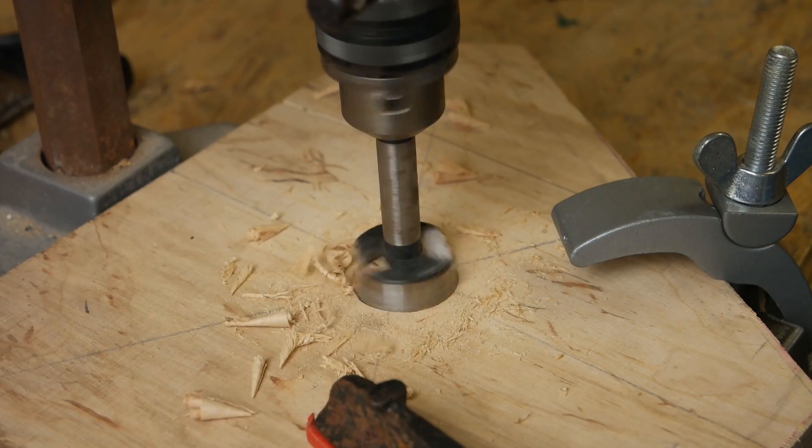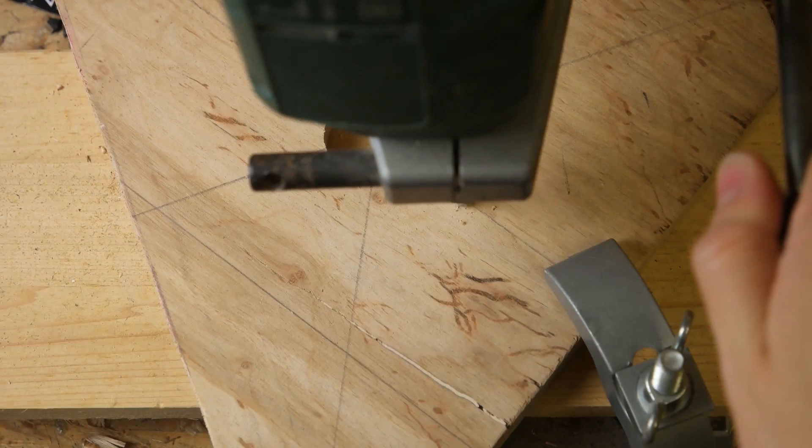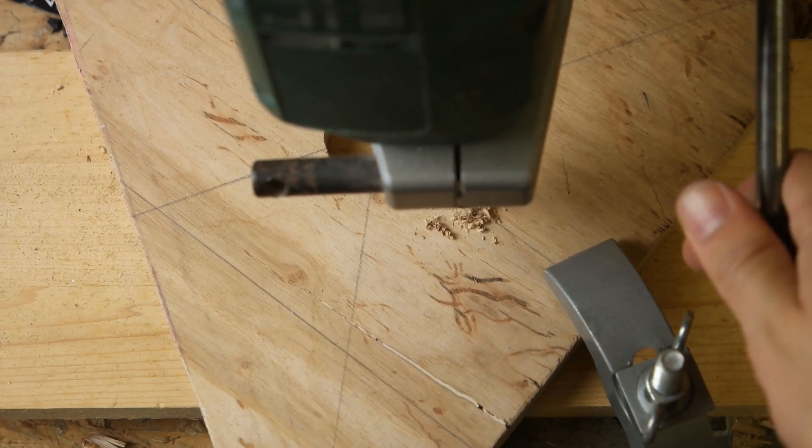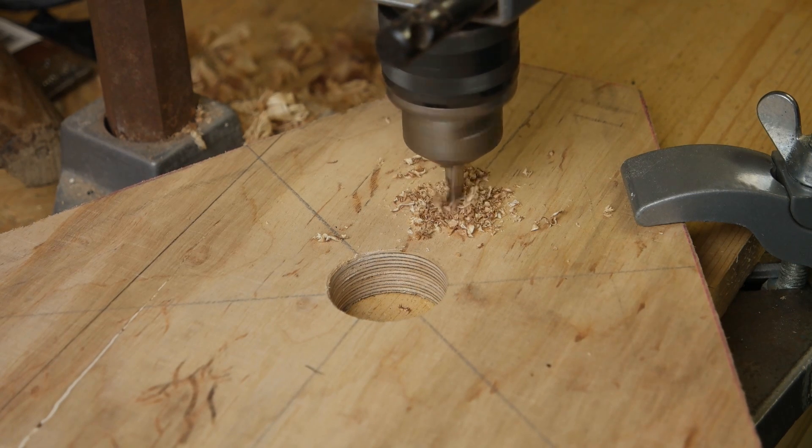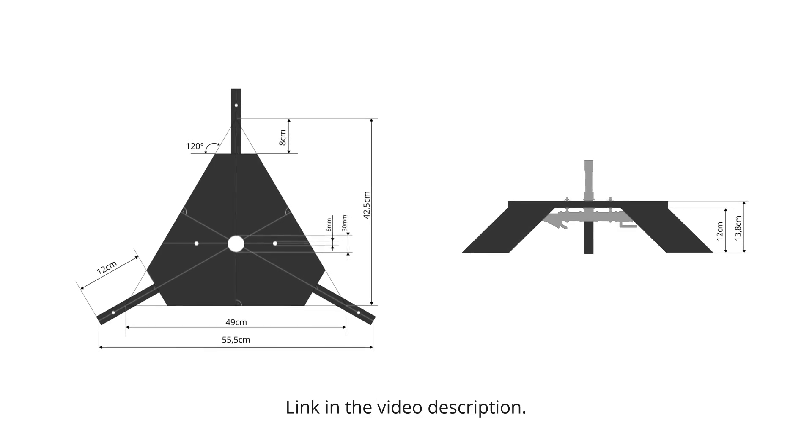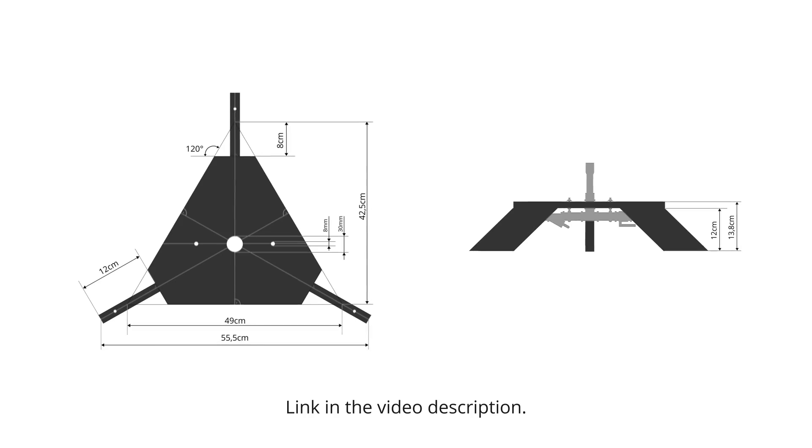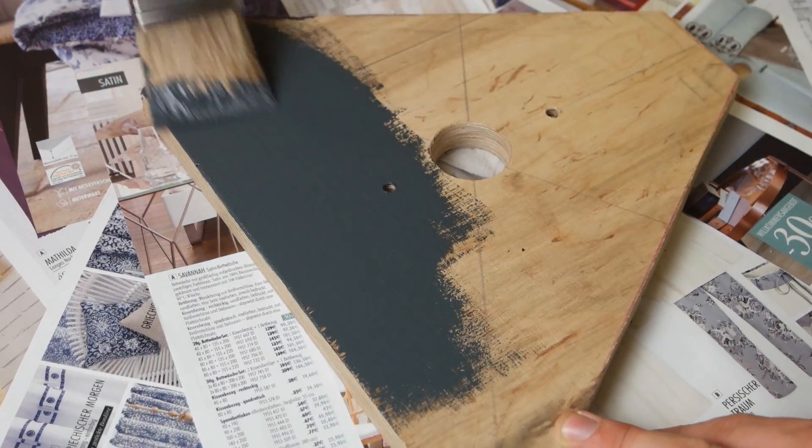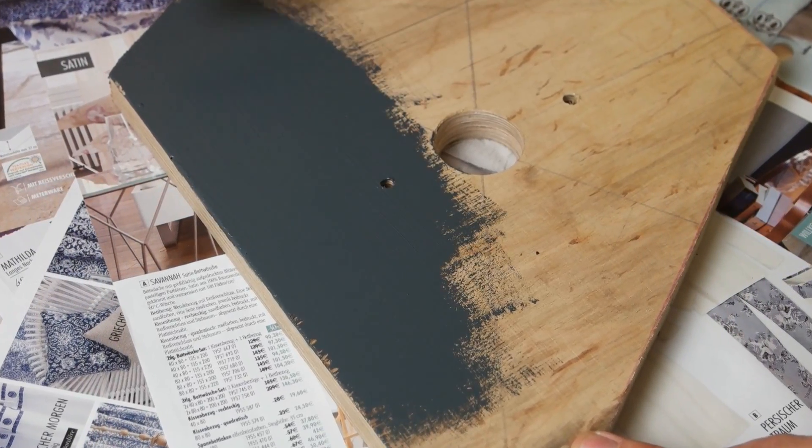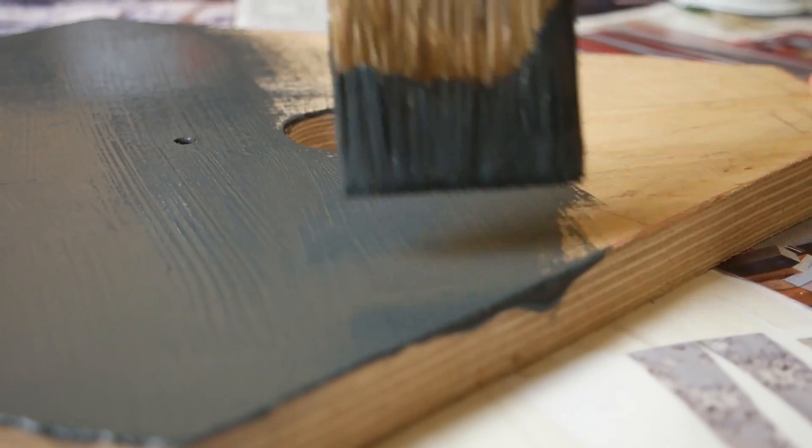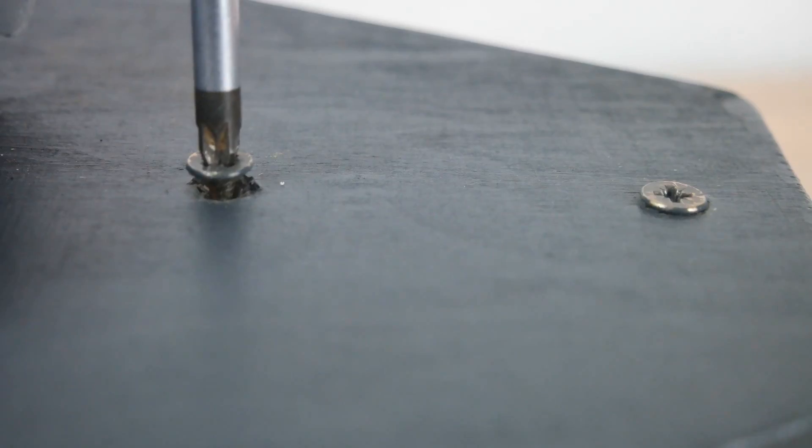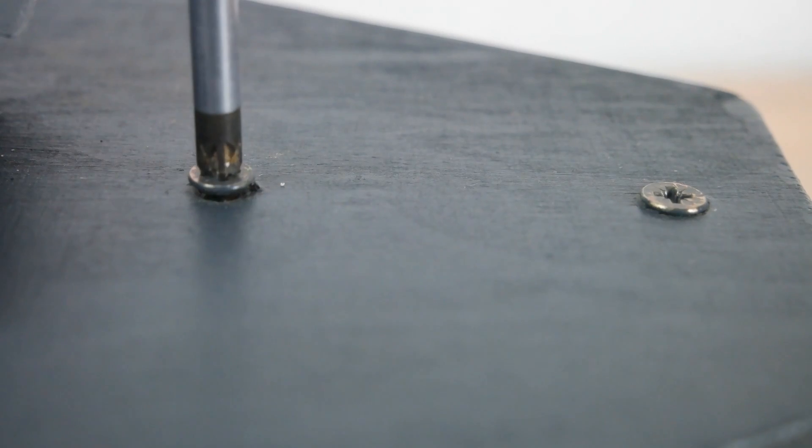The base plate has some holes as well, so that the pipe system can be attached later. You can download a detailed technical drawing with all relevant dimensions of the main construction as a PDF. Next, you should prime the construction and then apply external coating. After waiting a day, the feet can be screwed to the base plate.